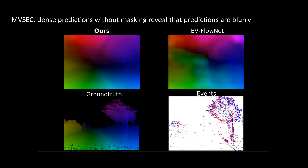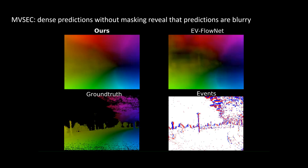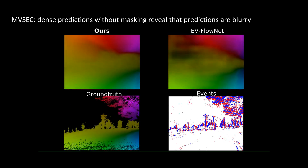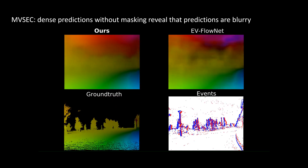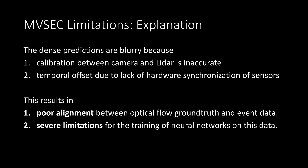This obscures a major limitation of MVSEC that becomes apparent when dense predictions of the networks are shown. Visualizing the dense predictions reveals that the methods only predict blurry optical flow. This is the case because the calibration between camera and LiDAR is inaccurate and there is a temporal offset due to the lack of hard drive synchronization of the sensors, resulting in poor alignment between optical flow ground truth and event data, as well as severe limitations for the training of neural networks.